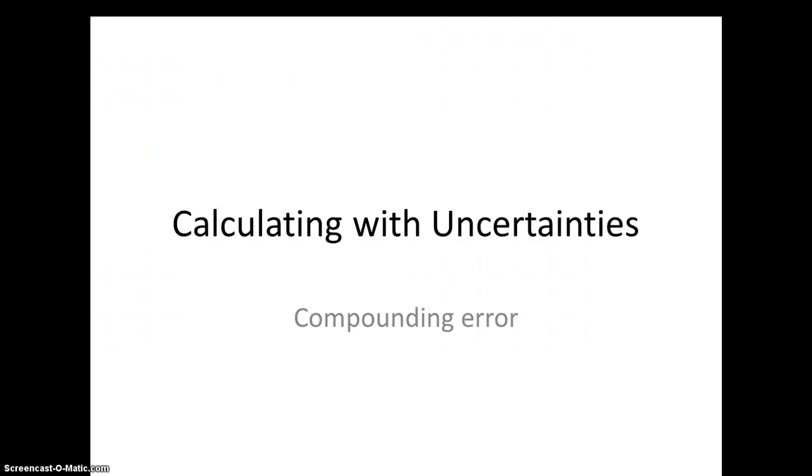In our last video we talked about uncertainties - how we express the limitations of our measuring tools and the materials we're working with when we report a measurement. Today we're going to look at calculating using these uncertainties with the understanding that anytime we use a number based on a measurement to do math, the result has to reflect any inaccuracy or uncertainty that happened in the initial measurement. We can't do math and suddenly make our measurement absolute and perfect.